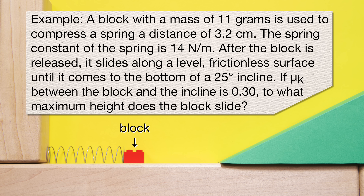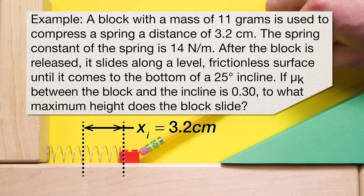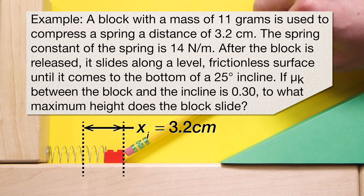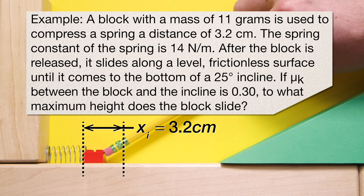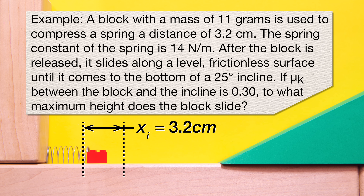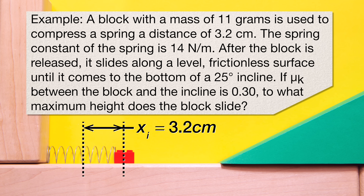A block with a mass of 11 grams is used to compress a spring a distance of 3.2 centimeters. The spring constant of the spring is 14 newtons per meter. After the block is released,